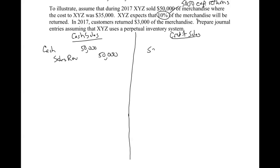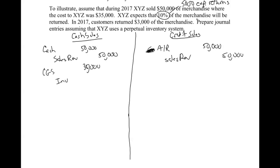Over here on the credit sales side, we'd actually have accounts receivable and sales revenue. The only thing different is this one's credit sales so it's accounts receivable. We also have to record cost of goods sold and inventory at the cost for $35,000, and that entry will be the same on both sides.